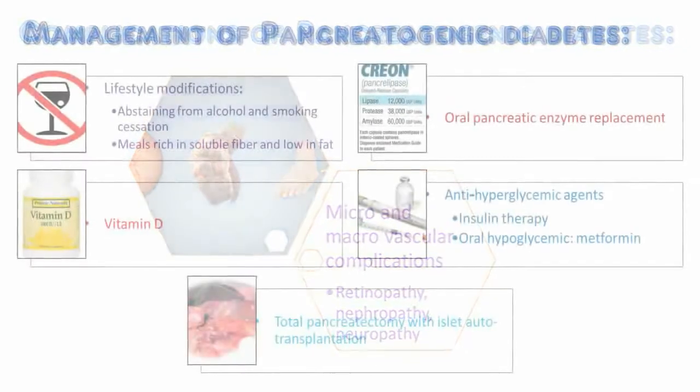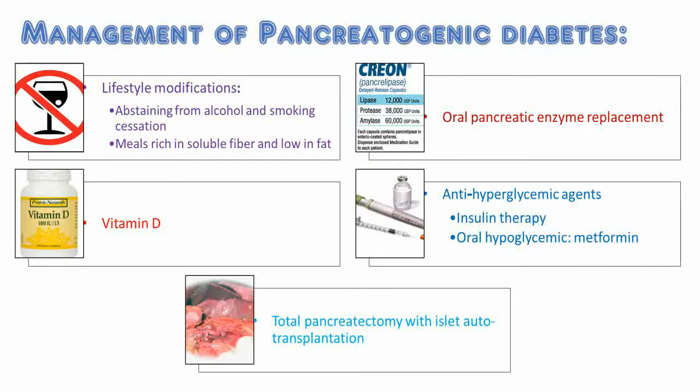Management of pancreatogenic diabetes. Similar to type 1 and 2 diabetes mellitus, control of hyperglycemia to achieve and maintain HbA1c less than 7% remains the primary target. Management includes lifestyle modifications, oral pancreatic enzyme replacement, anti-hyperglycemic agents, and total pancreatectomy with islet autotransplantation.